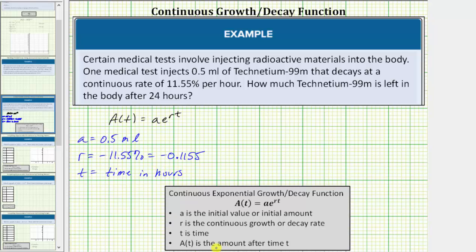Which means A(t) is the amount after t hours. This is all the information we need to set up our continuous decay rate function.